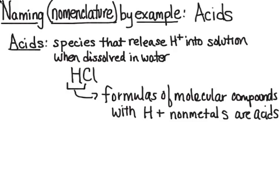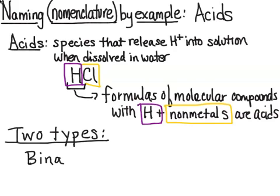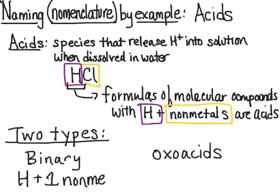That leaves us with our two main types. We have a binary acid and then an oxoacid. The first is the binary acid, and that is a hydrogen plus one non-metal only. So you can easily identify those, they're just two pieces, two elements together.